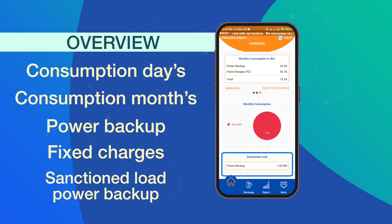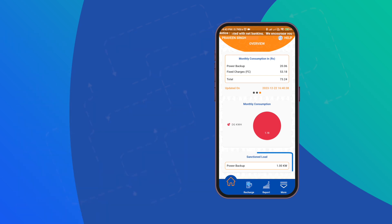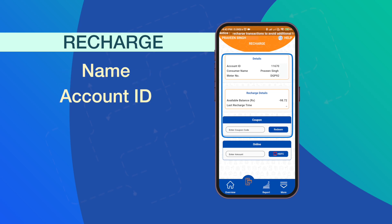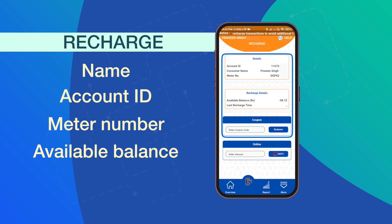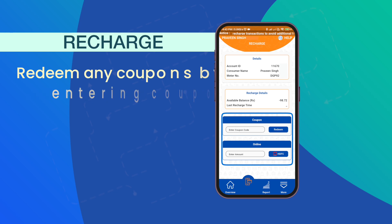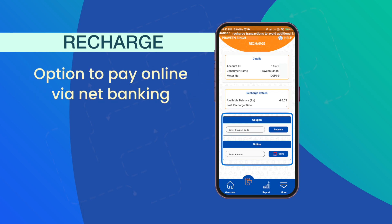The sanction load amount for power backup is displayed at the bottom of the page. Clicking Recharge takes you to a page that carries your consumer name, account ID, meter number, available balance, and time of last recharge. You can also redeem any coupons on this page by simply entering the coupon code, and there's an option to pay online via net banking.